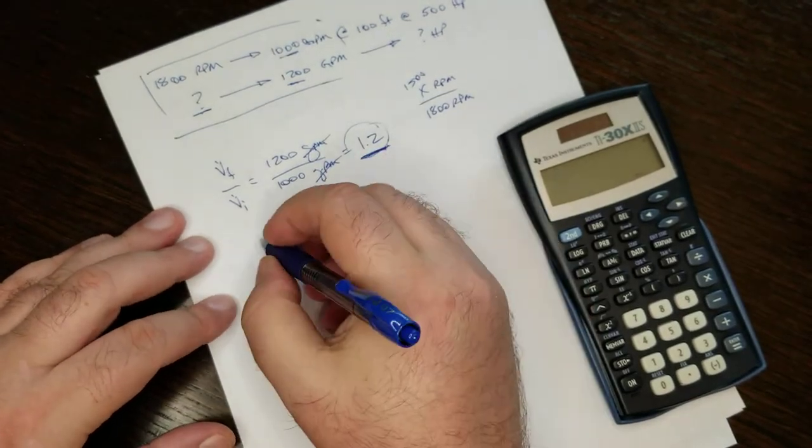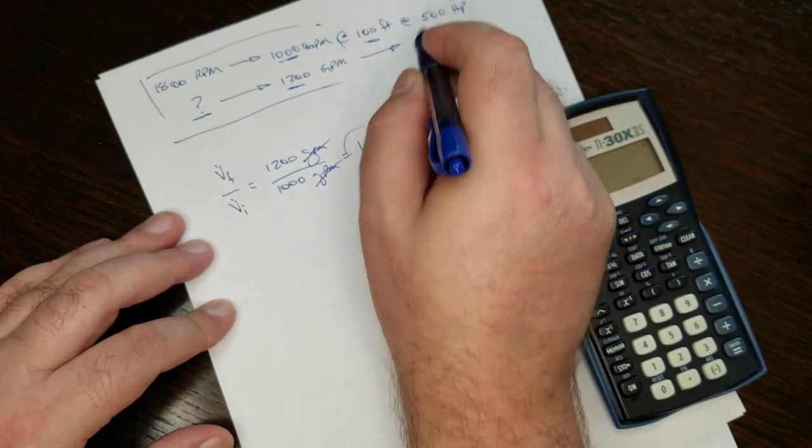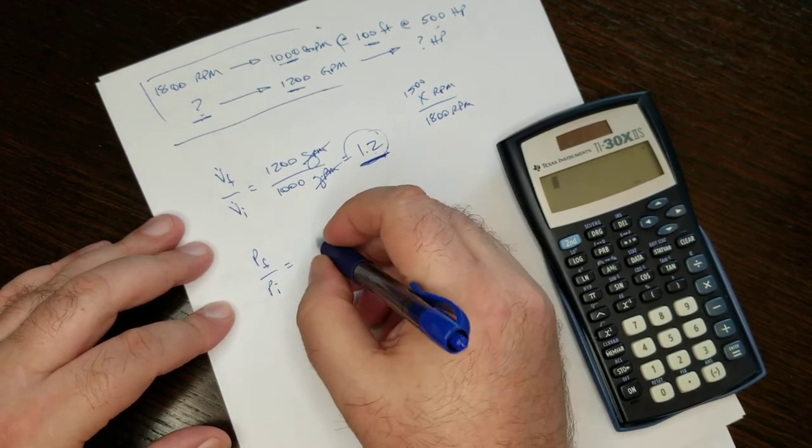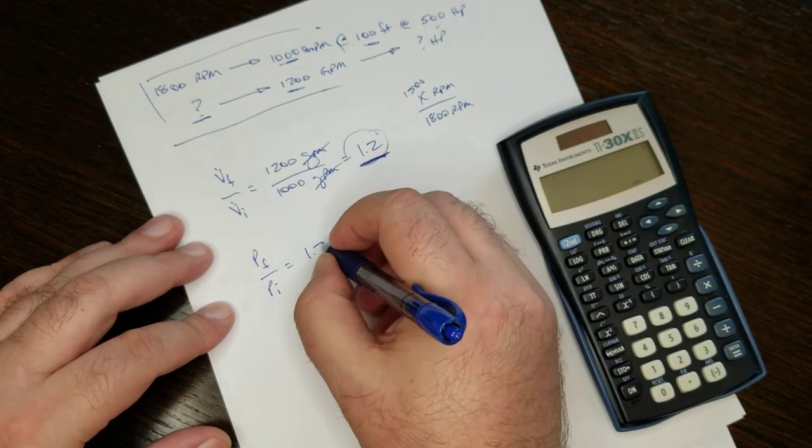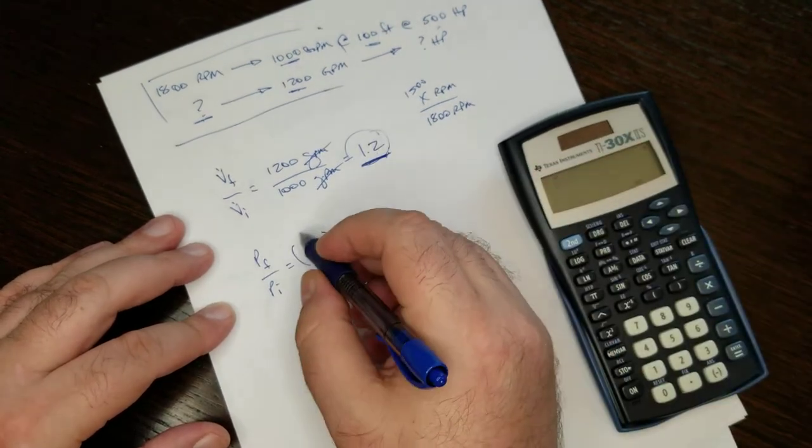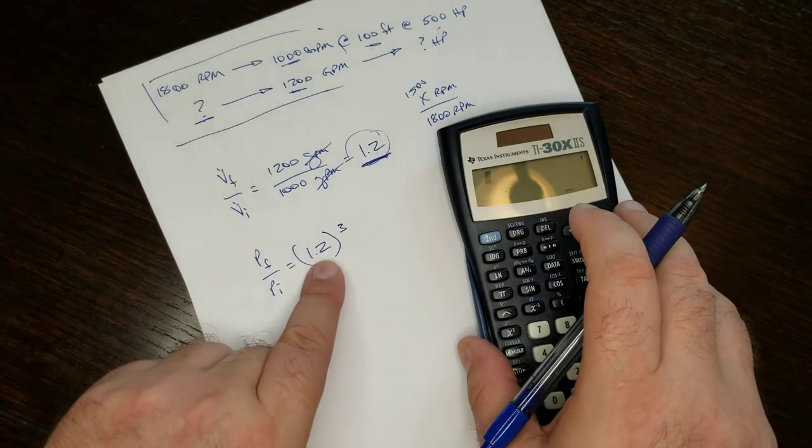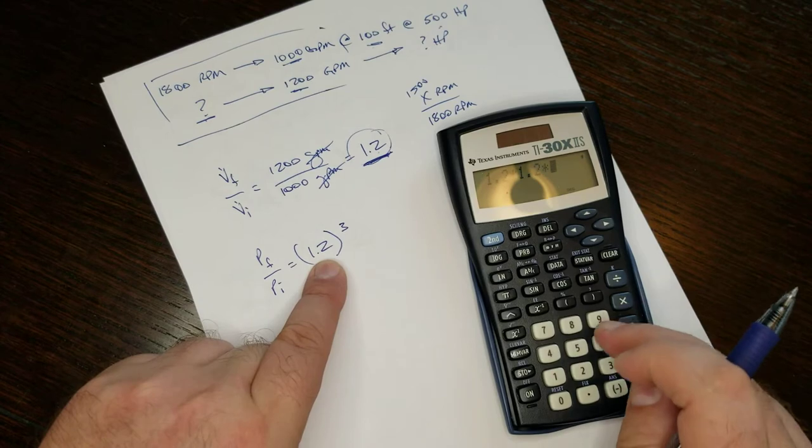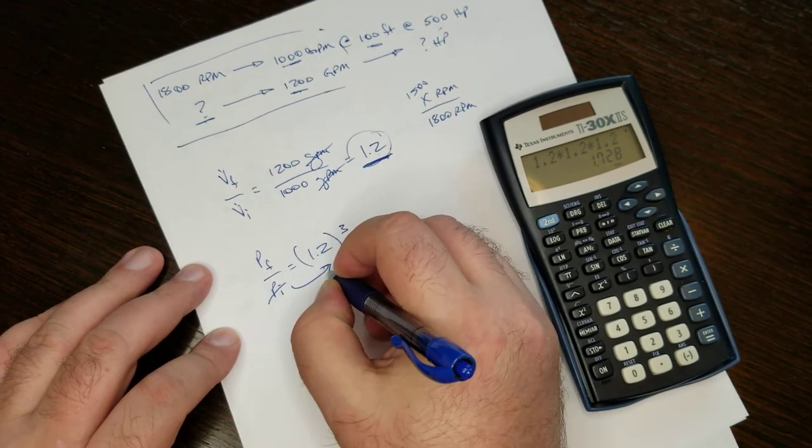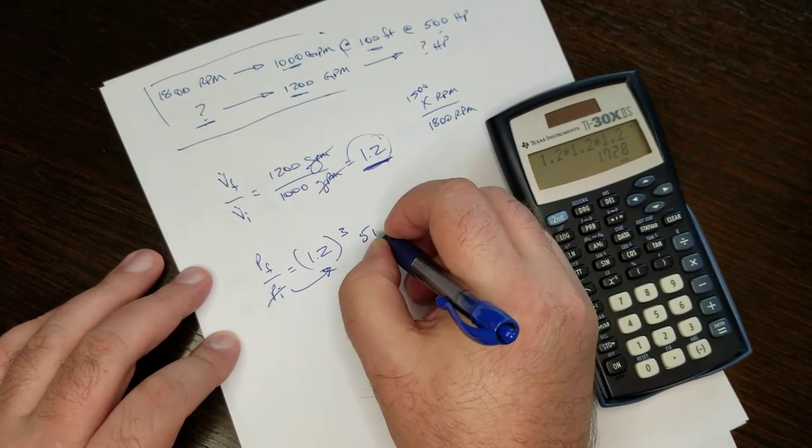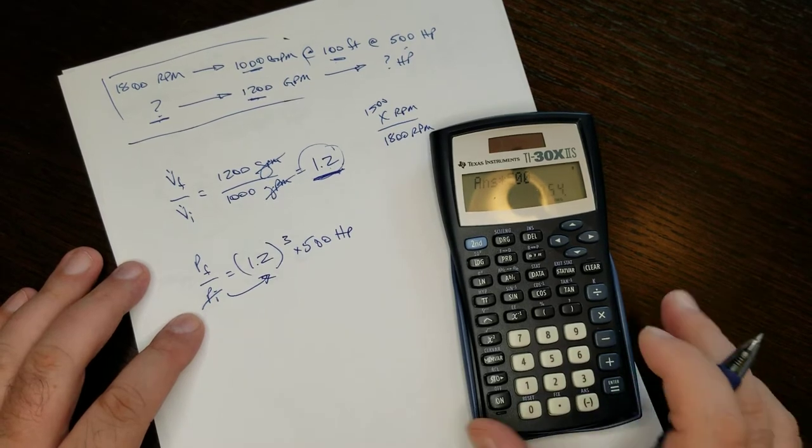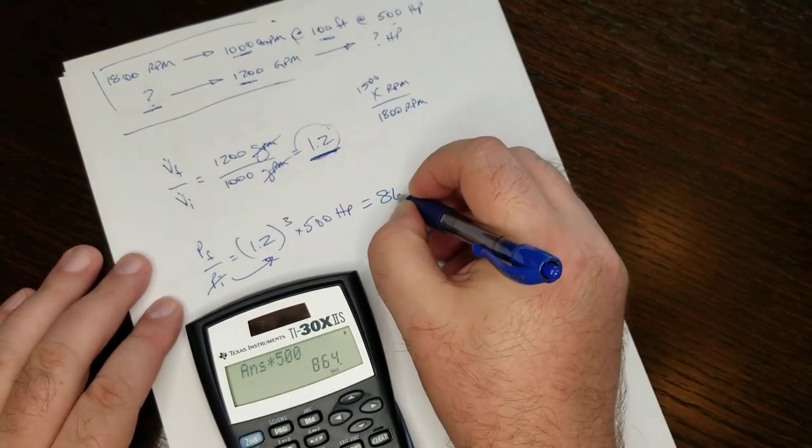I have the 1.2 and we're not looking for pump head. We're looking for power. And so power final over power initial is equal to 1.2 cubed. This is the factor. This is the final over initial speed and we substituted flow rate. You end up with the same value. So 1.2 times 1.2 times 1.2. We're going to move this over here. Our initial power is 500 horsepower times 500. The answer is 864 horsepower.